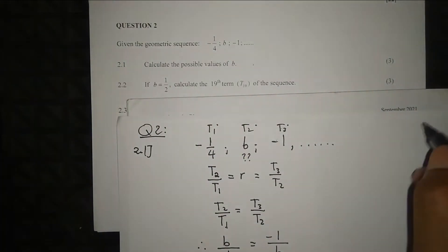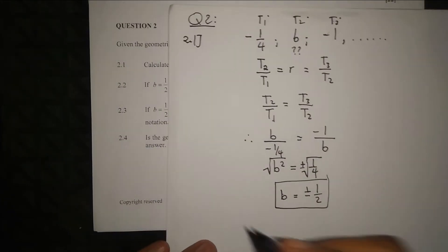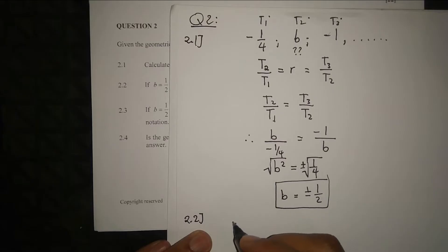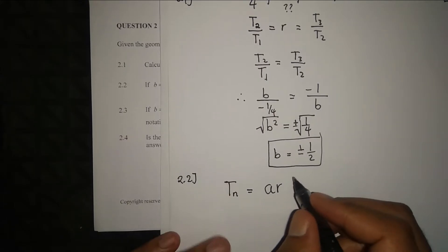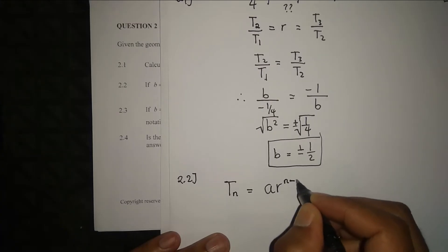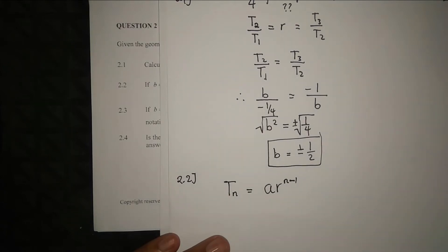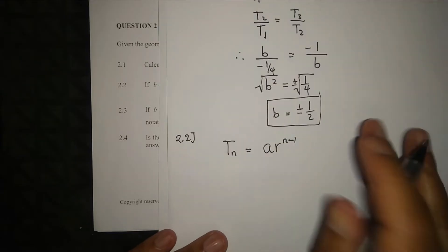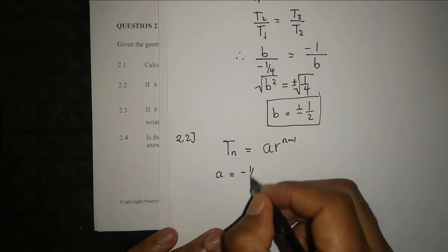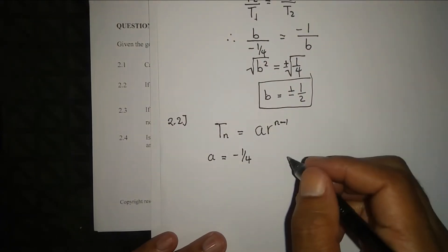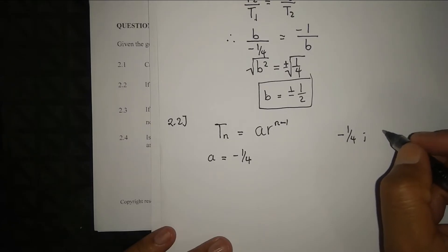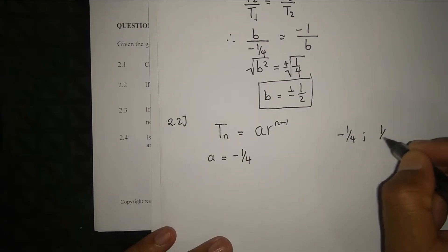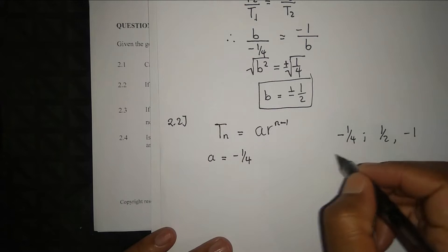For question 2.2, with b equal to one over two, we calculate the 19th term, t19, of the sequence. The formula for the nth term of a geometric sequence is tn equals a times r raised to the exponent n minus one, where a is the first term. Our a value is negative one over four, which is t1.